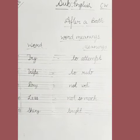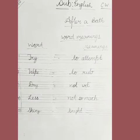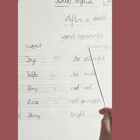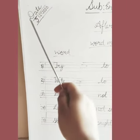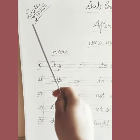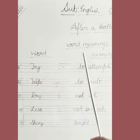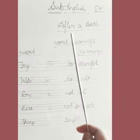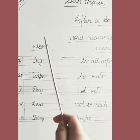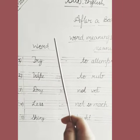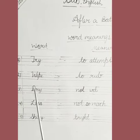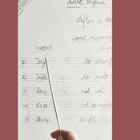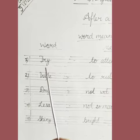Welcome again class. This is your English session. Today we will continue chapter 'After a Bath' with the word meanings. First, write the date 9/5/2020, then write the heading 'Word Meanings' and 'Classwork'. You have to make two sections on your page — first for the word and the other for meanings.